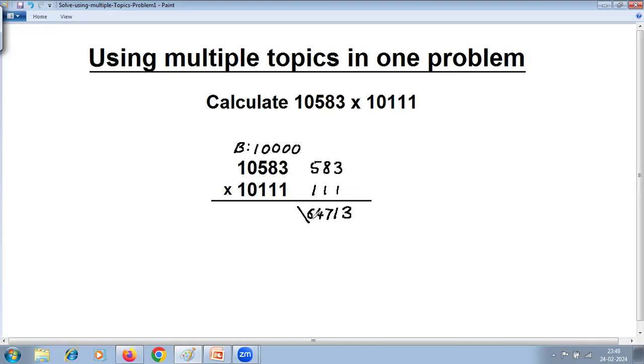Now to count digits here, 1 2 3 4 5, whereas we have only 4 zeros in the base, so this is extra that we will have to add to the left.